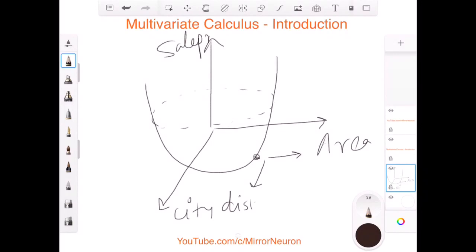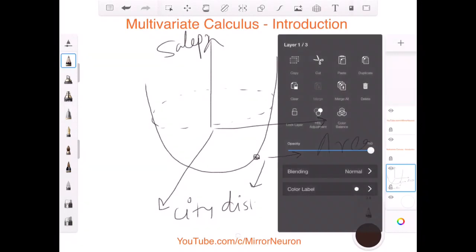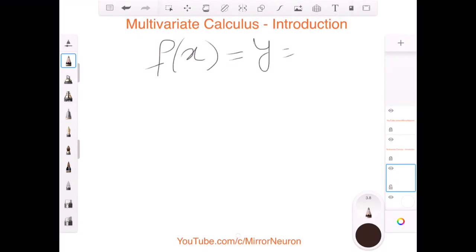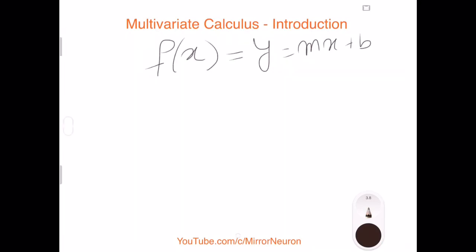And in terms of function, this is how it would typically look like. Say for example, I have a function. So earlier, it was something like mx plus b. This was for the univariate calculus case.